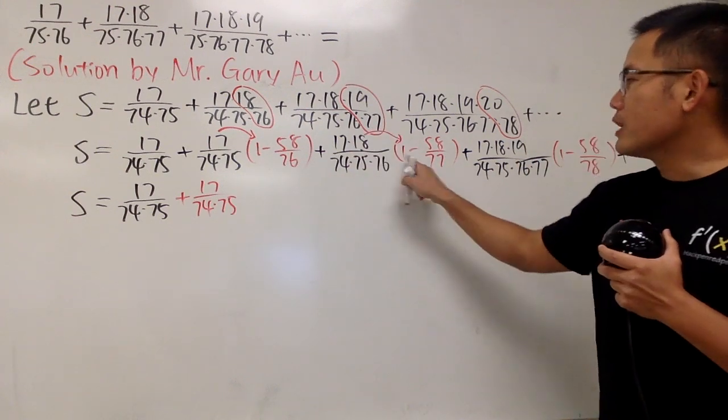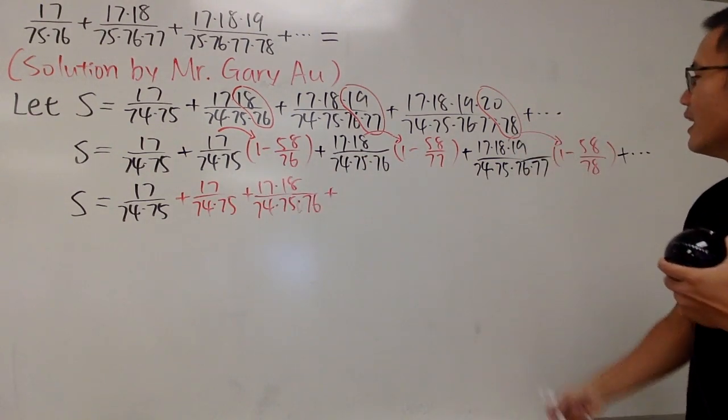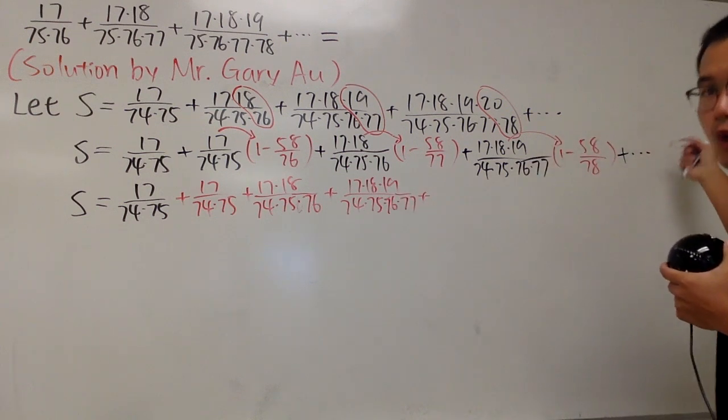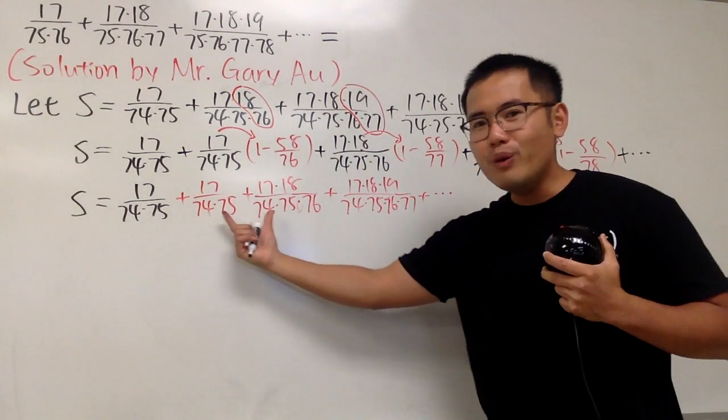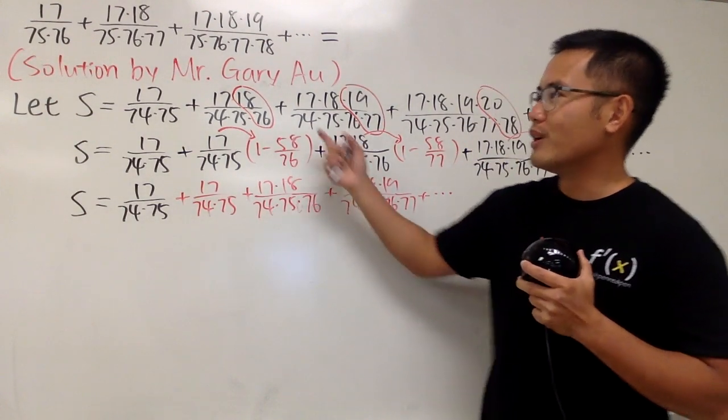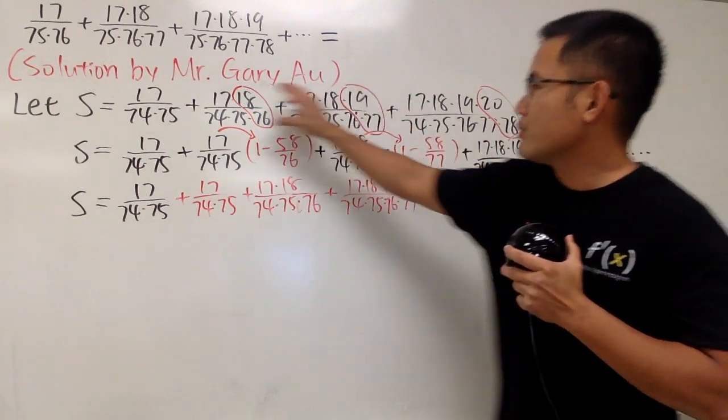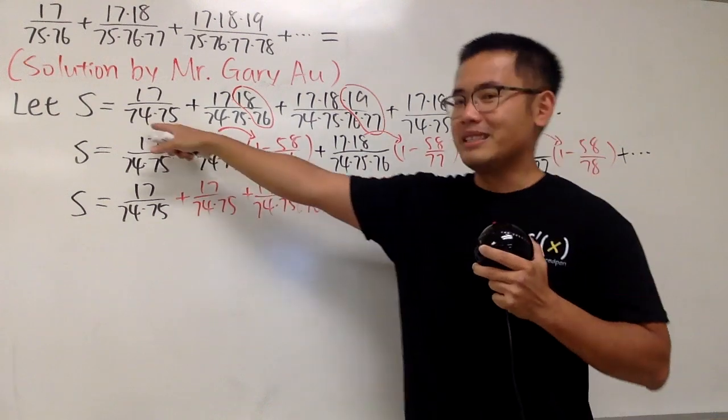Anyway, we'll continue with the following. So right here, we just add 17 times 18 over 74 times 75 times 76. And we do the same thing right here. We have 1 minus, still we will have 58 on the top, but the denominator is 77. And we'll continue. Now, this is how we are going to continue. Keep S as how it is, and we are not going to mess around with the first term. Leave it, 17 over 74 times 75. Well, as we said earlier, we want it to have more terms to work with, just like this.